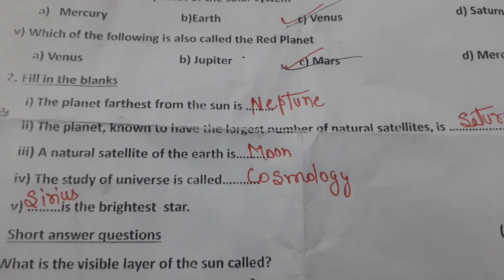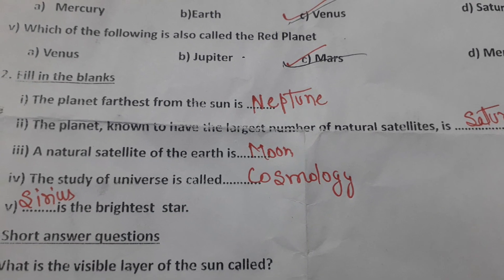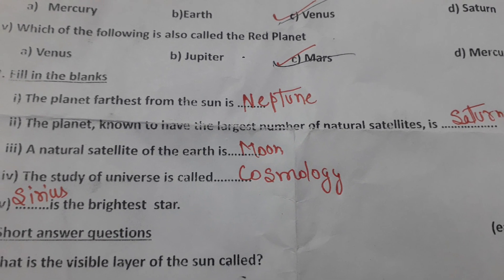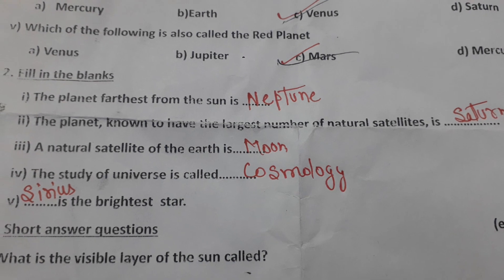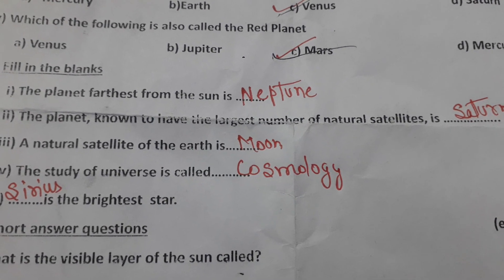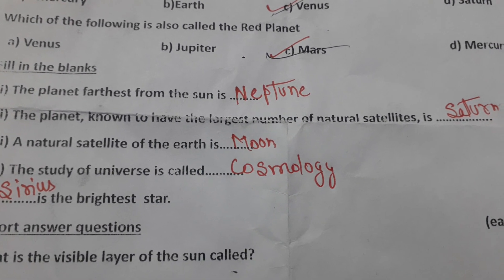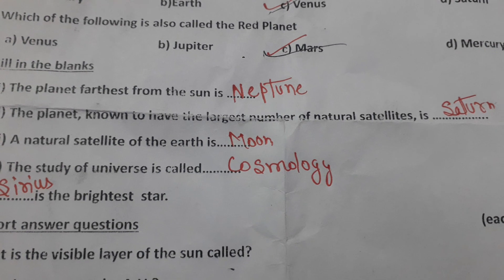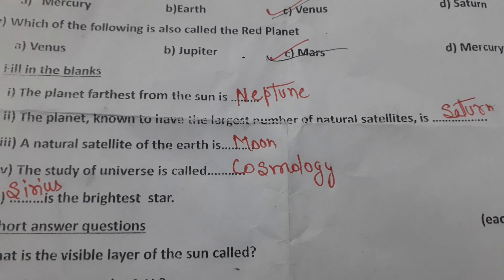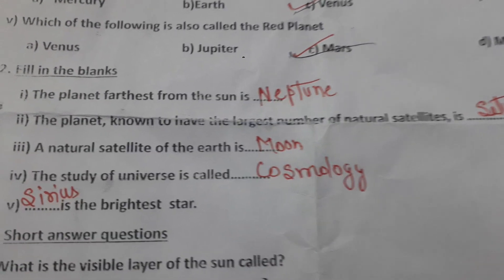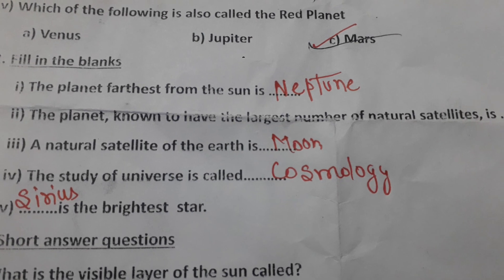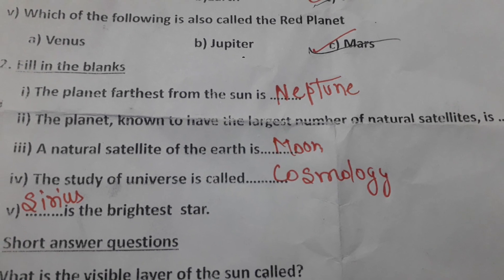Fill in the blanks. Question number 1: The planet farthest from the sun — answer is Neptune. The planet known to have the largest number of natural satellites — answer is Saturn. A natural satellite of the Earth is the Moon.